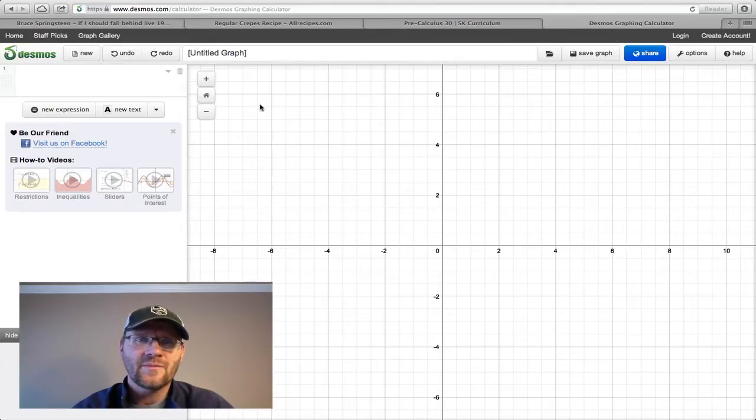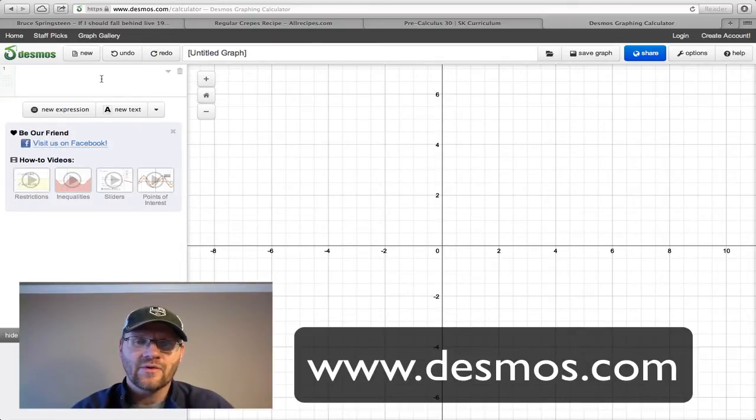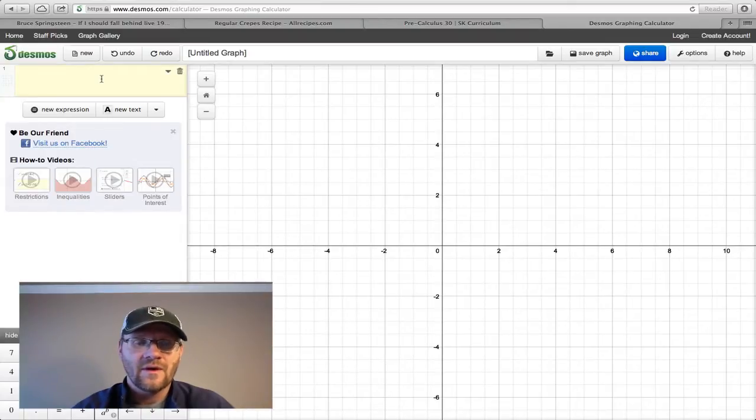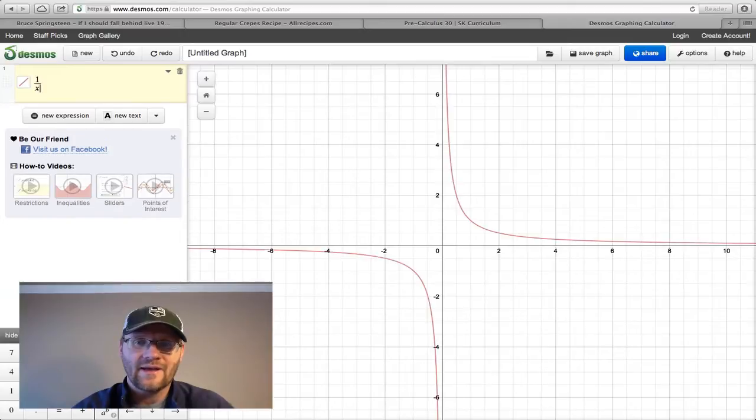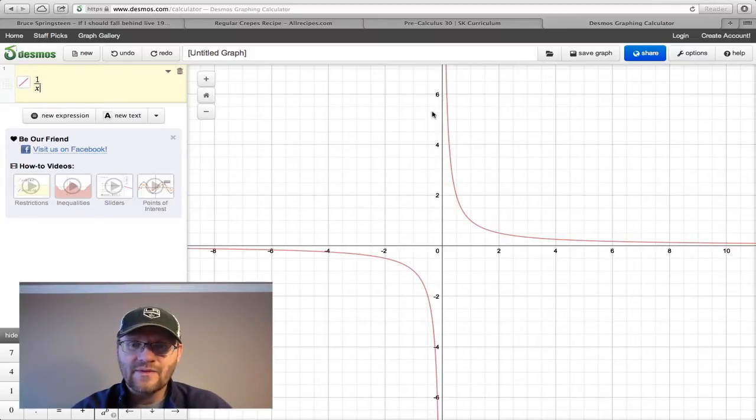So we're using a different piece of graphing software today. It's called desmos.com. It's an online calculator, and it works real well. So the first thing we're going to do is just take a look at the most basic of rational functions. That's going to be 1 divided by x. And as you can see on the left-hand side here, it's the red graph, 1 divided by x. So you can see that there appears to be a vertical asymptote right at x equals 0, and there appears to be a horizontal asymptote at y equals 0. There are no x or y-intercepts, but this is your basic rational function.